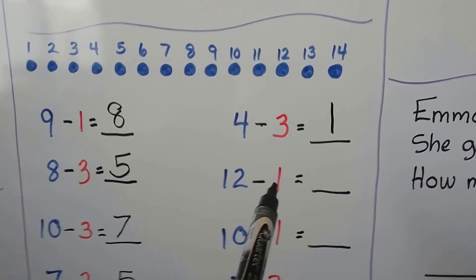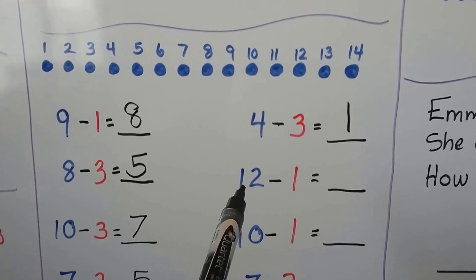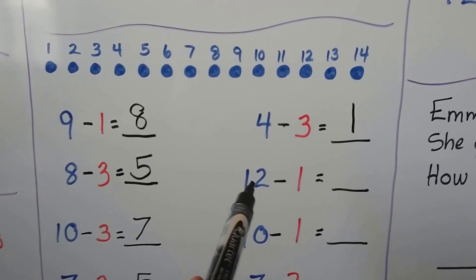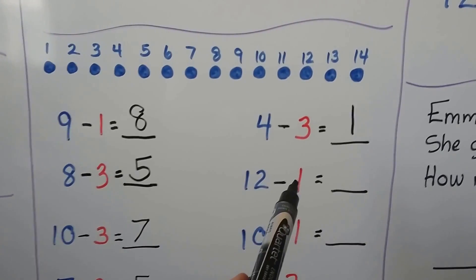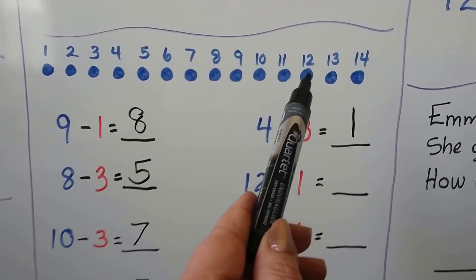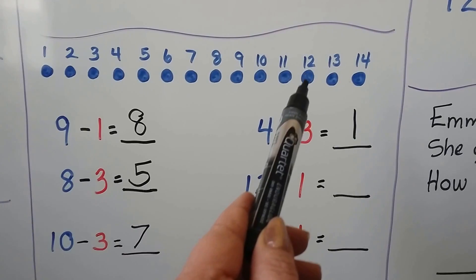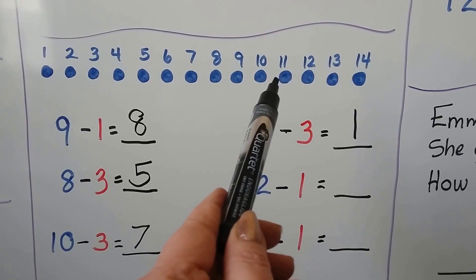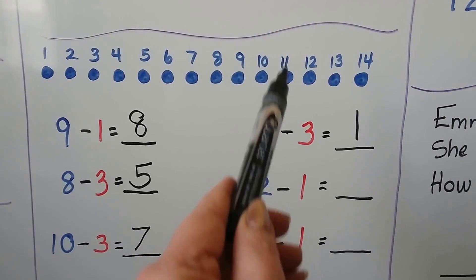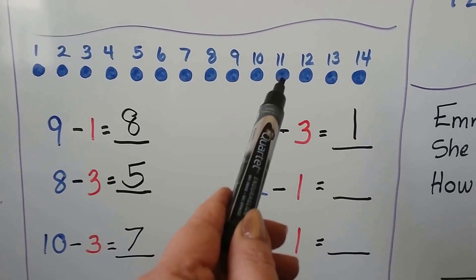12 minus 1. We start at the 12 and count back 1. 12, count back 1. That brings us to 11.